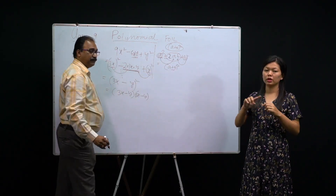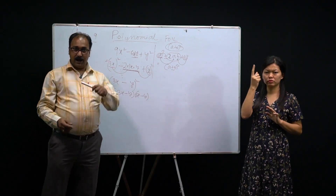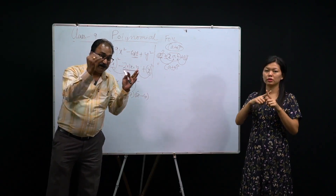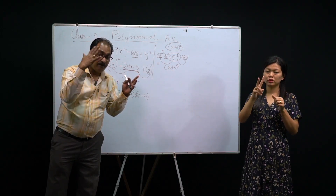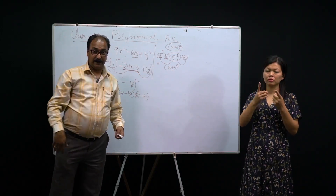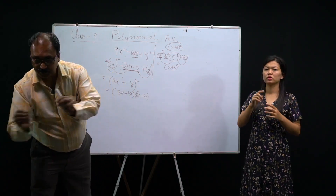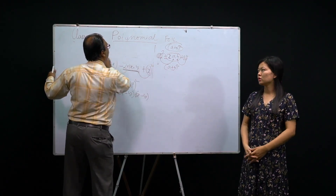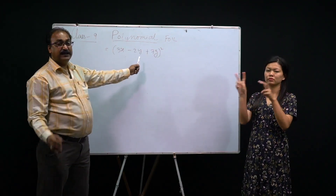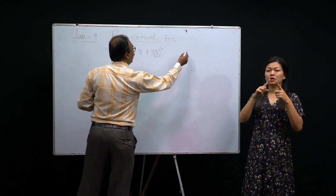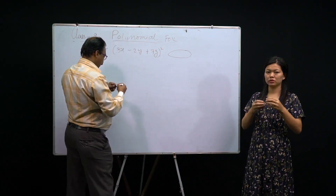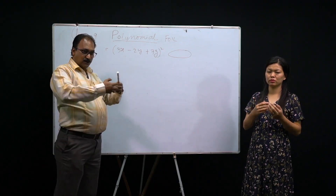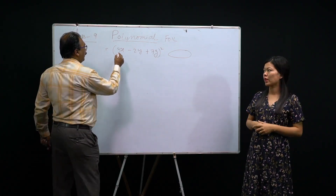Now I'll show you a bigger formula: (a+b+c)² = a² + b² + c² + 2ab + 2bc + 2ca. That is called expanding — from small to big. Think of a rubber band: when you pull it both sides it expands. This formula you have to apply to expand the expression. Now look at this question: expand (a−b+c)².